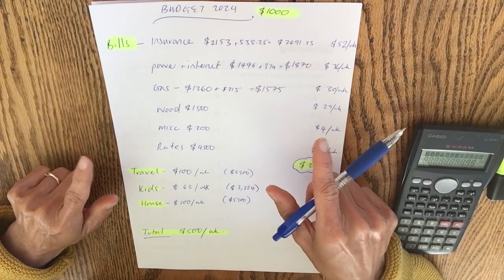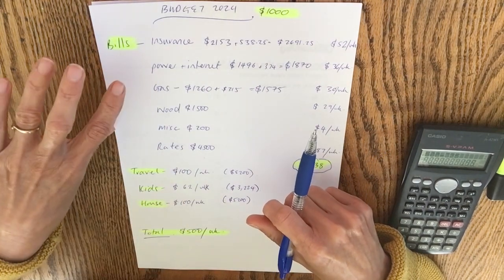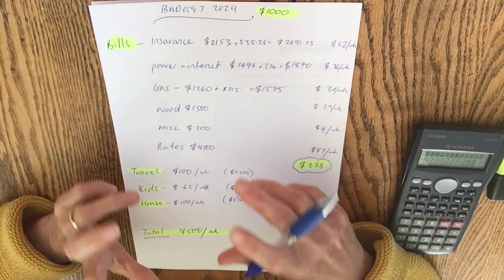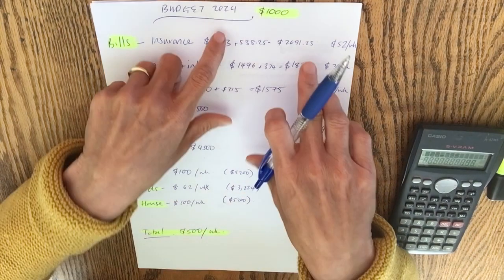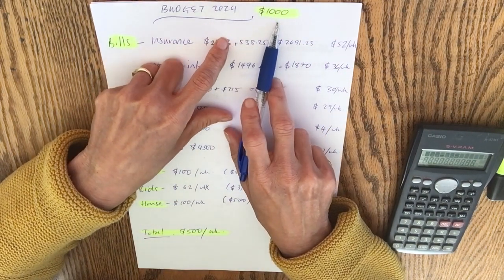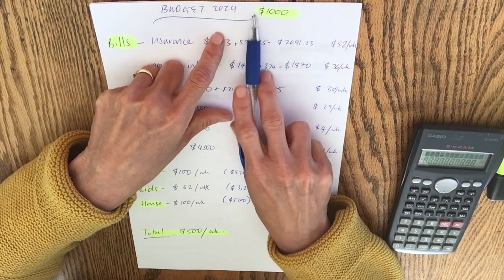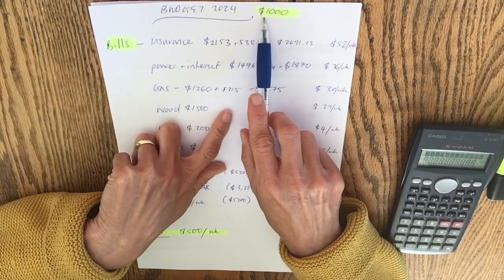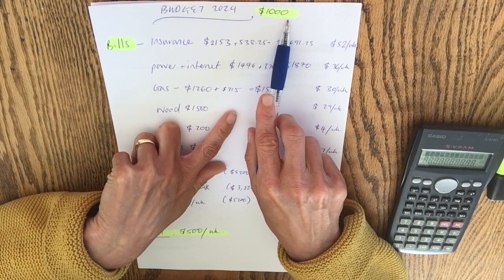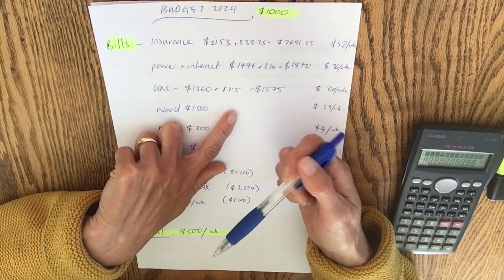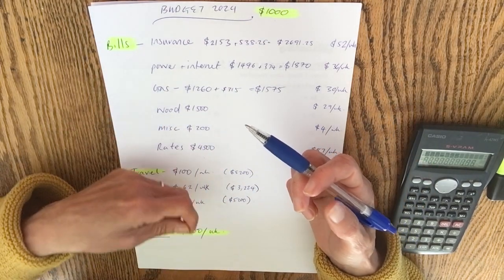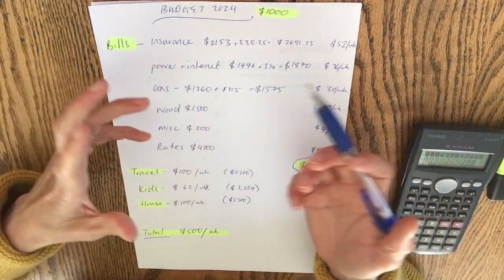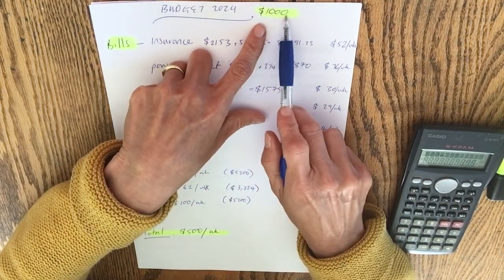One of the keys to our budgeting success though is budgeting every dollar. So if you've ever been a Dave Ramsey follower or fan you'll know he talks about making every dollar work for you. And that's exactly what we do. We know how much we're going to get because we're giving ourselves $1,000 per week. Anything else we earn above this $1,000 is going straight into investments so that we can retire early. So we need to make sure we spend every dollar of this $1,000 and tell it where to go.